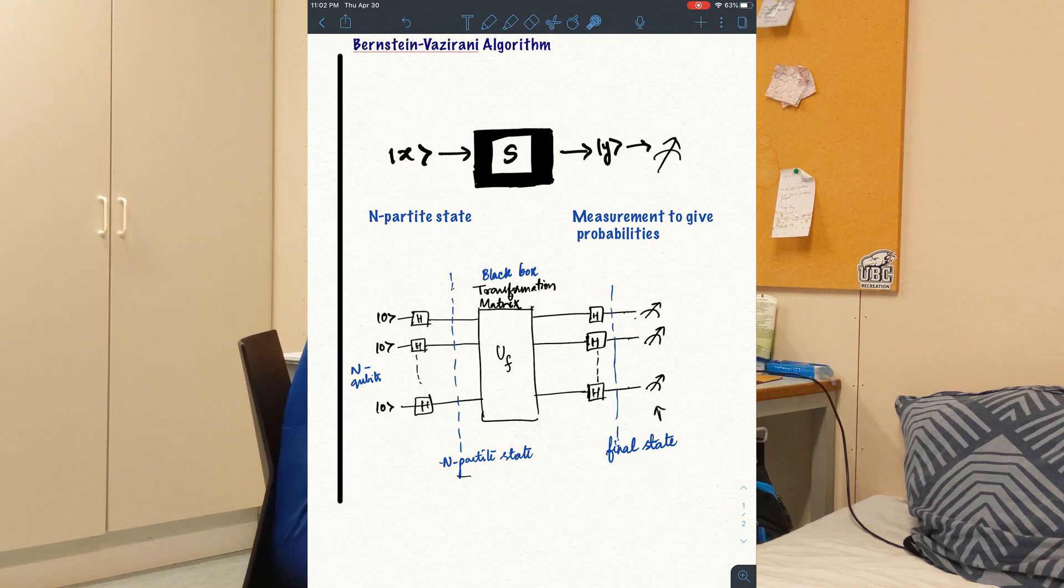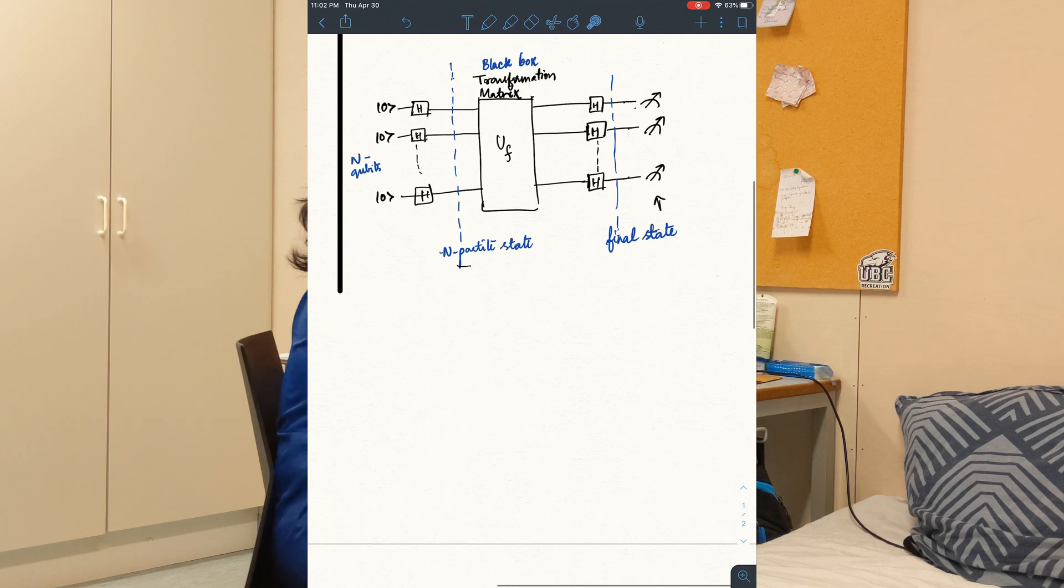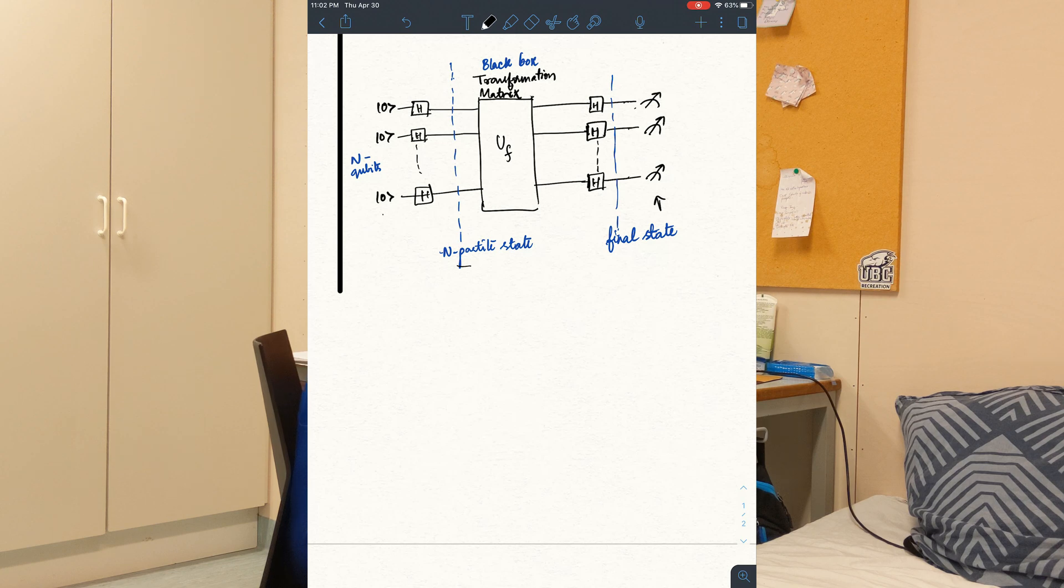Let me walk you through how the quantum algorithm is implemented. So here we have our circuit in which we have initialized n number of qubits to 0 and we apply a Hadamard gate on all of n such that we get our input state, which is an n-partite state. So we all know that the Hadamard gate takes the state 0 to plus and 1 to minus.